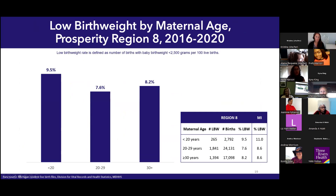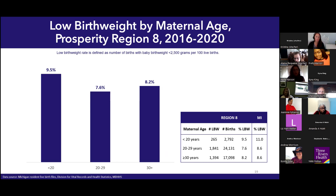This slide shows the proportion of low birth weight births by maternal age group in Region 8. There is a slight U-shaped pattern. The proportion is highest among the youngest age group — under 20 — at 9.5 percent, which is lower than the statewide rate of 11 percent. This is followed by the 30-plus age group at 8.2 percent. On the lower end, 7.6 percent of live births to mothers 20 to 29 years of age were low birth weight — also lower than the statewide rate of 8.6 percent.